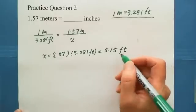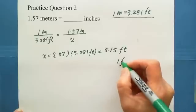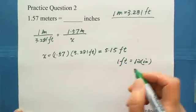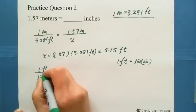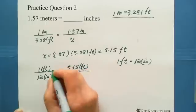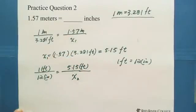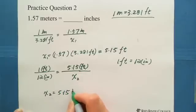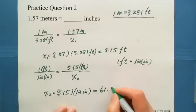After you got the 5.15 feet, then we can convert second step, convert feet to inches. We're using 1 foot equals 12 inches to set up another ratio proportion. Then we put 5.15 feet on the top, and we're looking for x2 which is inches. Foot foot cancel out. So we have cross multiplication. We got x2 equals 5.15 times 12 inches.